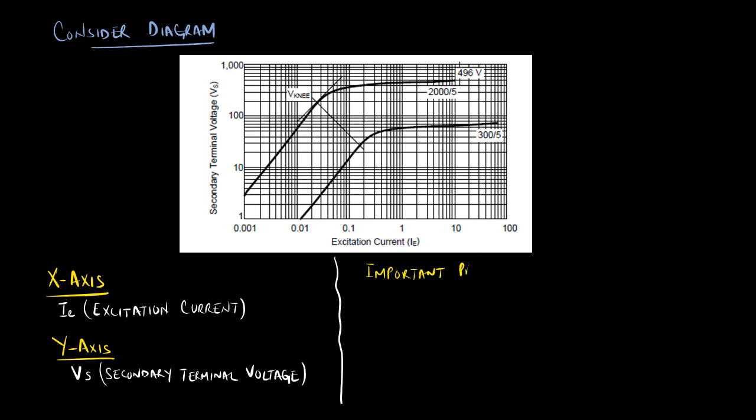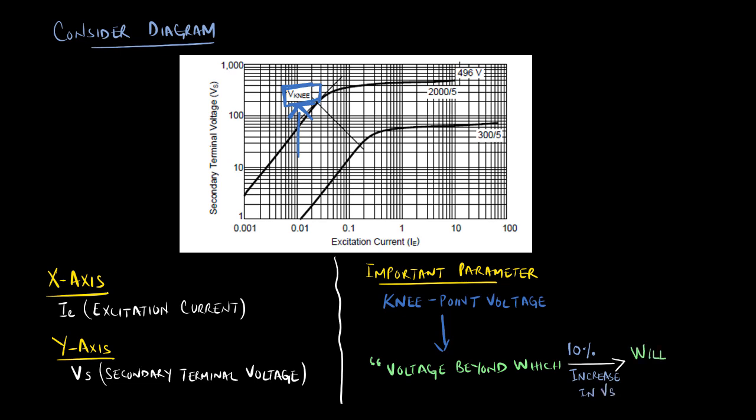An important parameter to consider is the knee point voltage. We can define this as the voltage beyond which a 10% increase in the secondary voltage will cause the excitation current to increase by 50%.